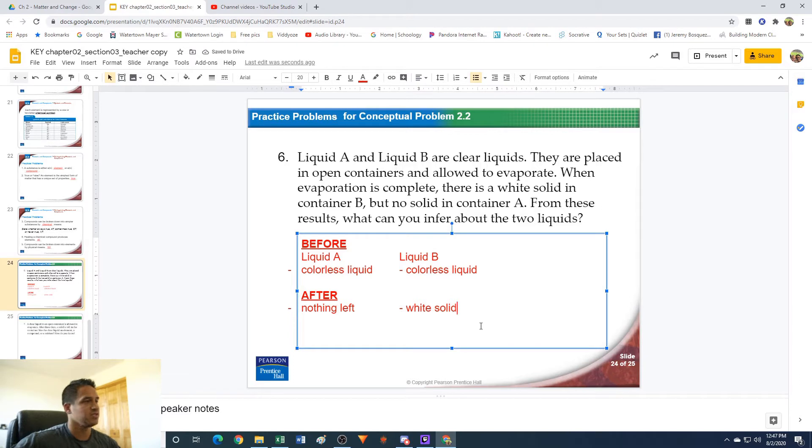So what can we infer about these two things? Well, if liquid A evaporates and there's nothing left in there, evaporation is a physical process. If you're going from liquid to gas, that's a physical process, and there's nothing in the container afterwards. That means that liquid A is probably a substance, because it's one material and it all evaporates into a gas. Whereas liquid B was most likely a mixture, because evaporation is a physical process. When it evaporated, you separated out a liquid and a solid. Because it was separated physically, it has to be a mixture, because compounds and substances can't be separated by physical means, only chemical ones.